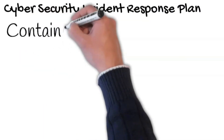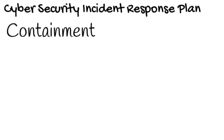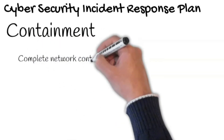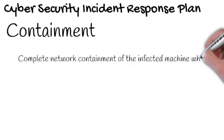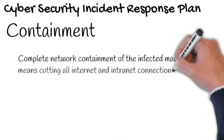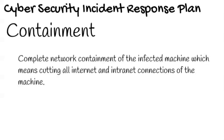Stage 3: Containment is the third stage of the CRP life cycle. In order to stop further spreading of malware and damage to the network and data theft, containment of the threat actors is what is needed in order to focus on the next stage of the incident response. A good example in practice would be a complete network containment of the infected machine, which means cutting all internet and intranet connections of the machine.